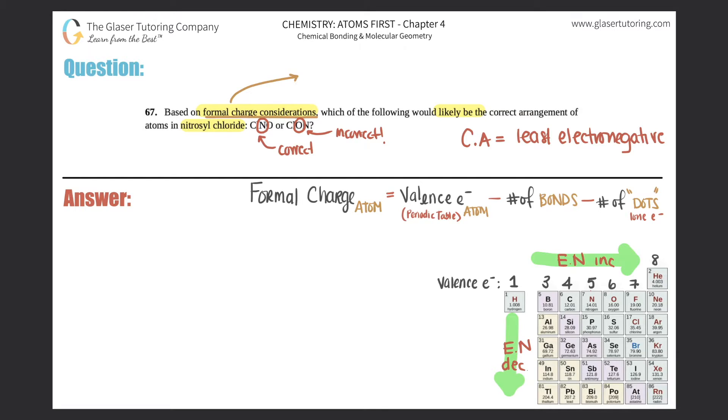So now I'm going to write the Lewis structures for these two proposed formulas. And remember, whenever you need to do the formal charges, the first thing that you need to do is you need to draw the Lewis structure perfectly. So if you guys are not strong in your Lewis structures, go back to questions. I think it starts with 40. We do a ton of Lewis structures then.